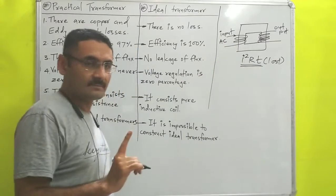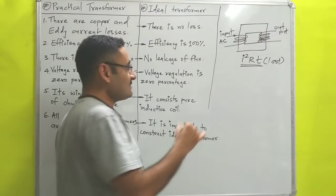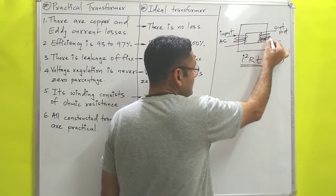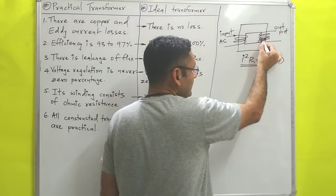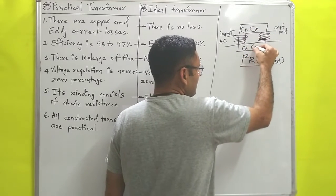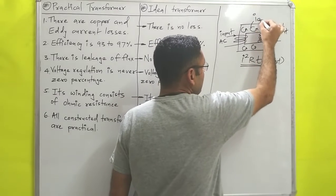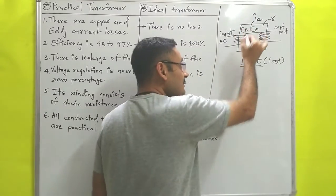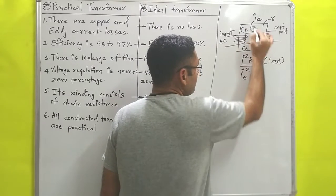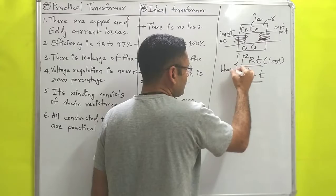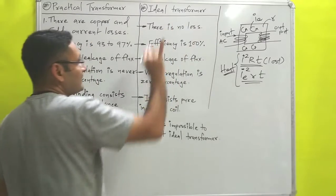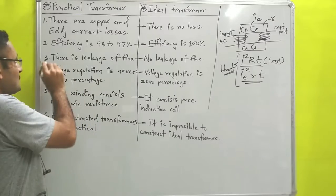It is called copper loss because the windings are made with copper. Eddy current loss means: due to the mutual induction process, current is also induced in the core material. Supposing the eddy current is Iₑ and resistance of the core material is R, then energy is also lost in the core as heat, according to Iₑ²R. There is no such loss in the ideal transformer.